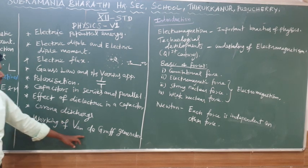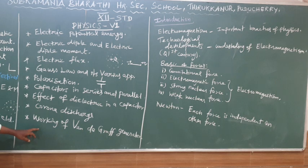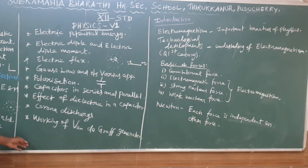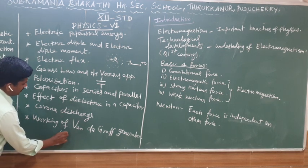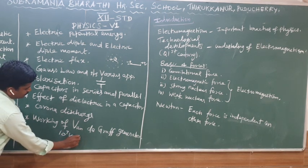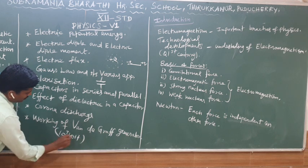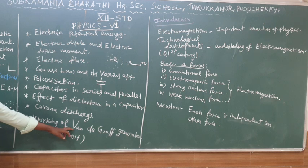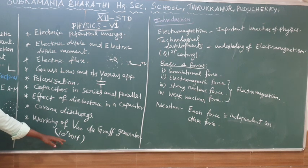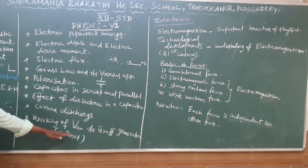Next is the working of the Van de Graaff generator. The Van de Graaff is a high-voltage generator. It can generate up to 10 to the power of 7 volts, creating a very high potential. It is a very high potential generator.